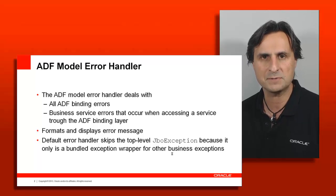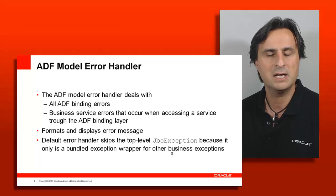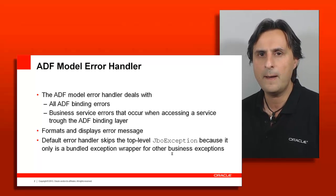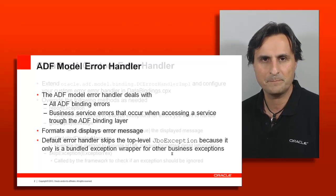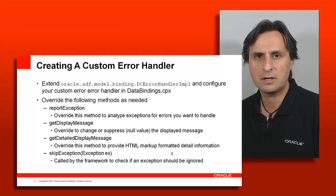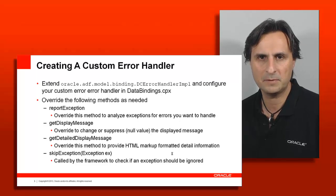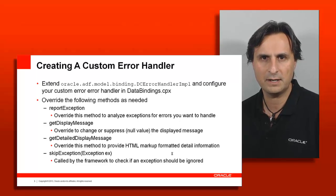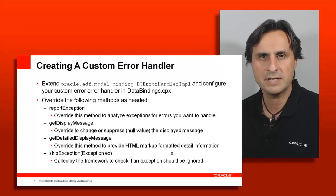This parent exception — this overall top-level exception handler, which is kind of meaningless — is automatically stripped out by the default error handler. You will see how you can change that if you don't like the way it is. To customize the error handler, you would write a custom implementation of the DC error handler implementation file, and you configure this in the data binding CPX file, which I will introduce later on the next slide where I have a visual for that.